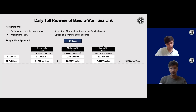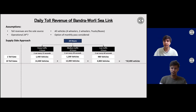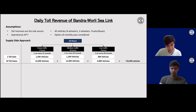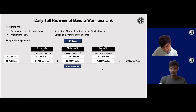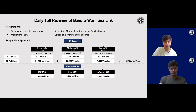Now we take the 32,000 vehicles and split them across the different categories: LMVs (four-wheelers), HMVs, and two-wheelers. I'd say 70% four-wheelers, 20% two-wheelers, and 10% HMVs. This gives us approximately 22,400 LMVs, 3,200 HMVs, and 6,400 two-wheelers — that's the split across the different vehicle categories.